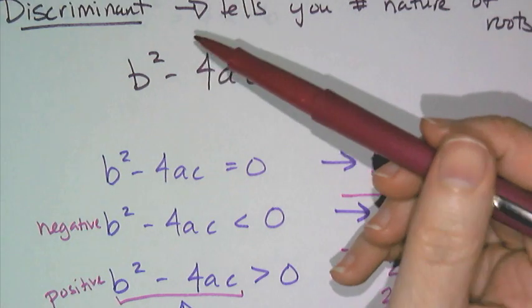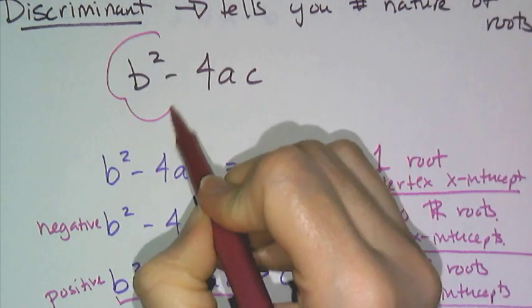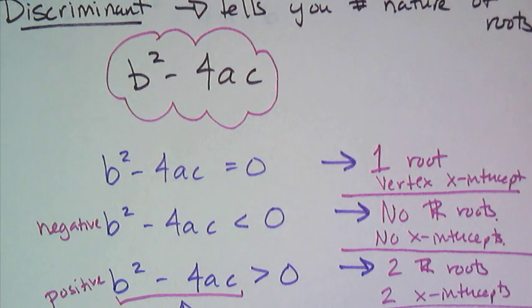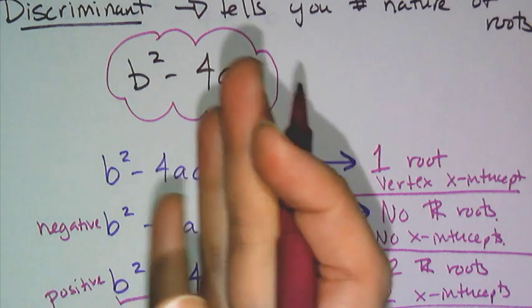Now because we have this b squared minus 4ac, this discriminant, it's actually super important for us and it can make our lives a lot easier. Because if you don't have a graphing calculator and you just want to check and see how many x-intercepts you have, check the discriminant.